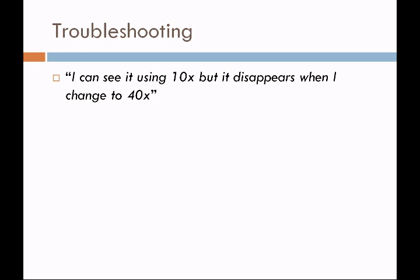Troubleshooting becomes an important part of microbiology because there's only one of me and usually 20 or more of you in the lab. One common issue is: I can see it using 10x, but it disappears when I switch to the 40x objective. Your slide may be upside down. The working distance is crucial — if the slide is upside down, there is too much distance between the slide and the objectives, so you'll find it at 10x but not with the 40x lens. You can check if a stain preparation is upside down by scraping the stain with your fingernail — it will come off, telling you which side is up.